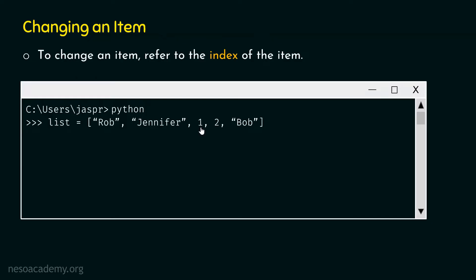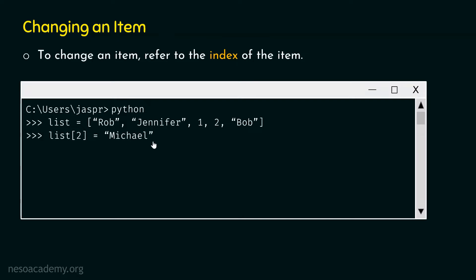We can do that easily by referring to the index of this item, which is two, because this item is at the third position in this list. So the index of this item is two. Let's hit enter and type this command: list[2] equal to Michael. By referring to the index of this item, we can replace it with the string Michael.